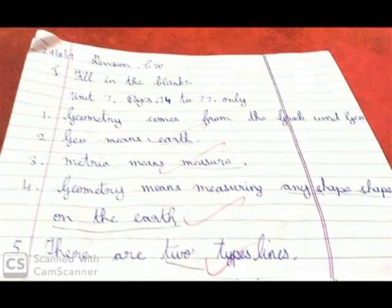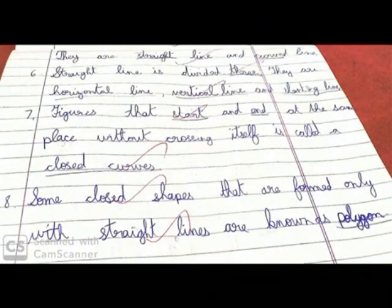Mast Quarter Revision — Fill in the Blank. Geometry comes from the Greek word 'geo', meaning earth or shape, and 'metria', meaning measure. So geometry means measuring any shape. There are two types of length.